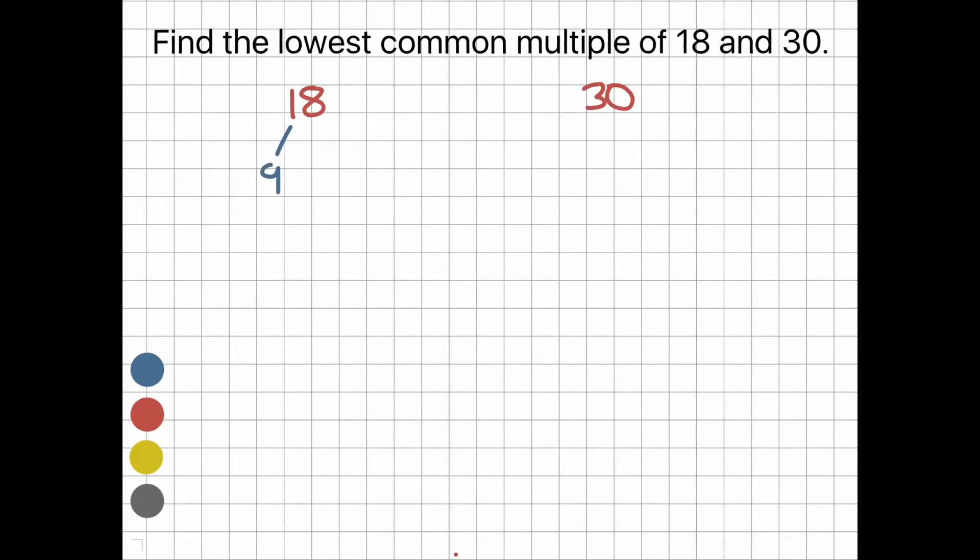So 18, there's 9 and 2, then in 9, 3 and 3. 3 and 2 can only be divided by 1 and itself, so we circle all those numbers. Now let's do 30. We have 15 and 2, 5 and 3.